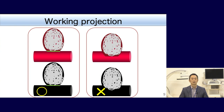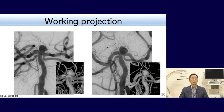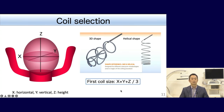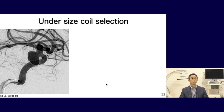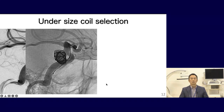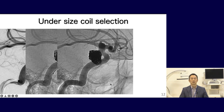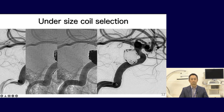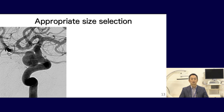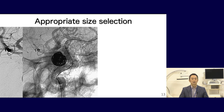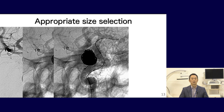We cannot use a projection where we cannot judge whether coils are in the aneurysm or parent artery. When selecting the framing coil, coil size is the average diameter of X, Y, Z. We can use 3D shape and helical shape coils. If coil selection is too small for the aneurysmal diameter, there will be space outside the coil mass on the final angiogram, which is a risk of re-canalization. On the other hand, when coil loops are in good contact with the aneurysmal wall, the aneurysm is occluded with coils completely.